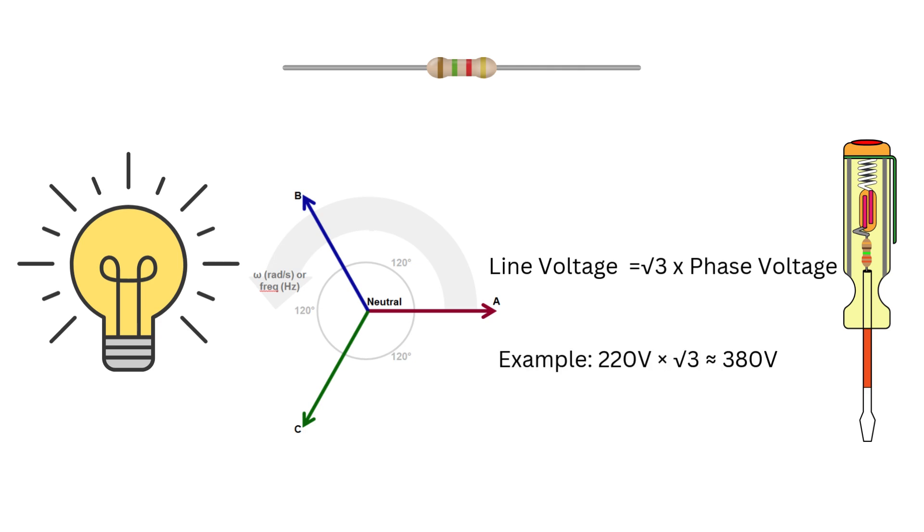For example, in a typical system, the phase voltage is 220 volts. Multiply it by root 3 and you get approximately 380 volts. This is the line voltage.